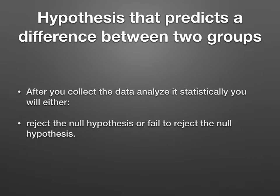A hypothesis that predicts the difference between two groups: after you collect the data, you have to analyze it statistically. When you write your paper, you'll either reject the null hypothesis — meaning the alternative hypothesis is correct — or you fail to reject the null hypothesis, which means the null hypothesis is correct. Failing to reject the null hypothesis would mean there is no difference between the two drugs' effect on planaria.